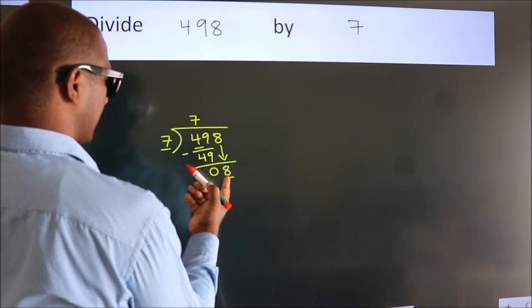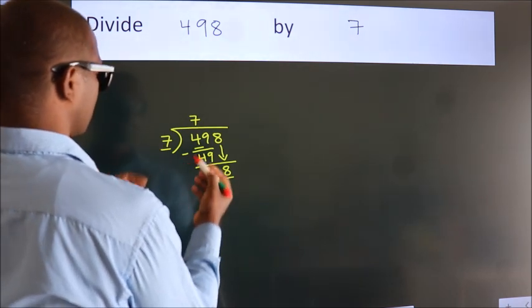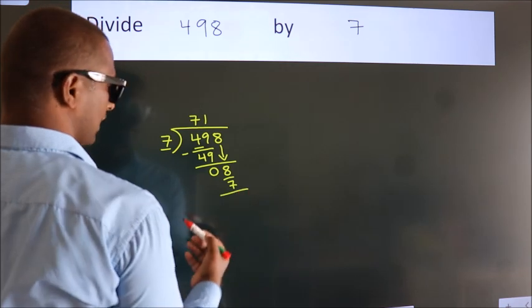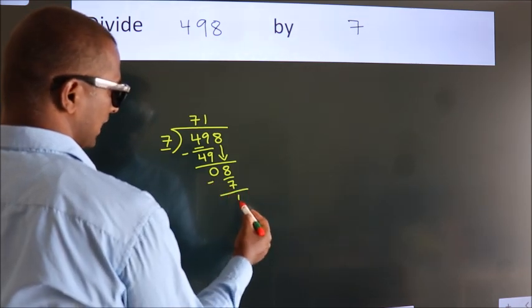A number close to 8 in 7 table is 7 1s, 7. Now we subtract. We get 1.